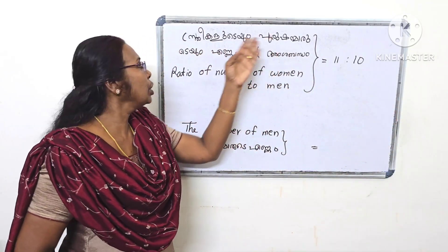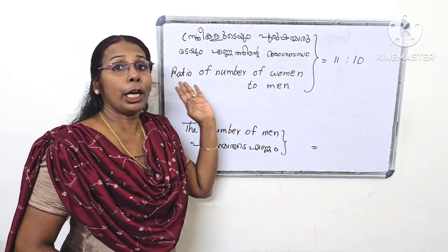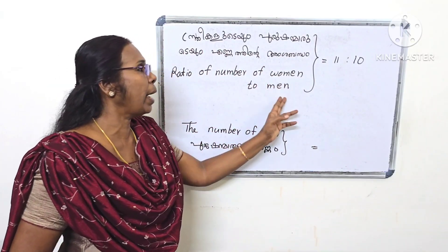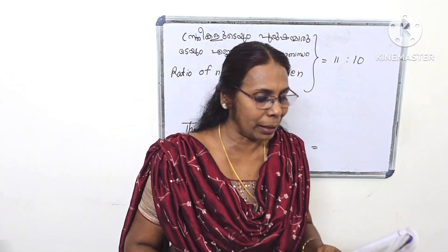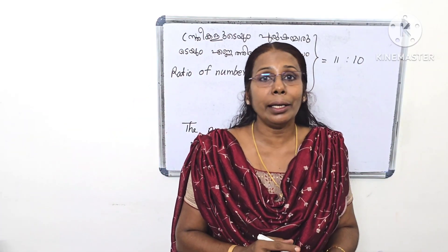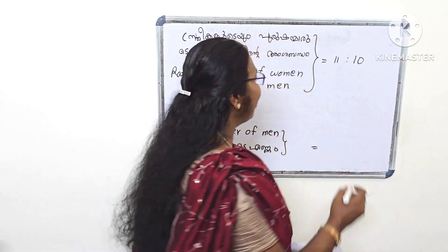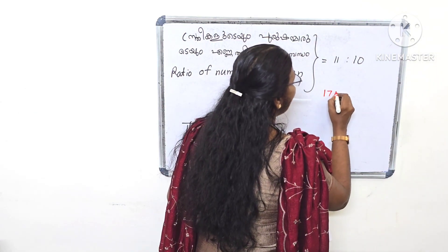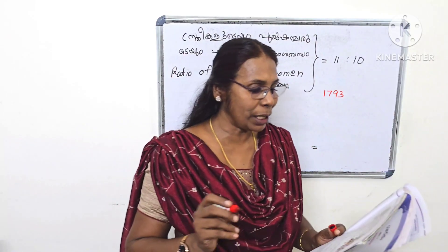The number of women is to men as 11 is to 10. That means the people given to us is 1793.